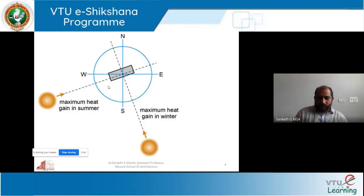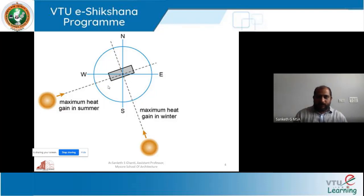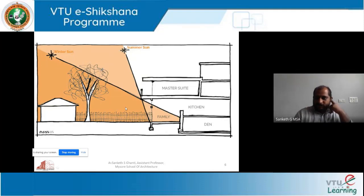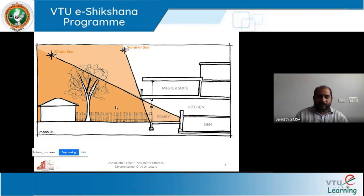We will also study U-values of different walls in the next class. Based on different orientation, the north wall can have different U-values. We can use walls of different thickness and different U-values or R-values based on direction. We can also use massing. Even trees are considered as shading devices - not just building blocks. Trees will also cut down a lot of light, which is helpful for cutting down a lot of heat.